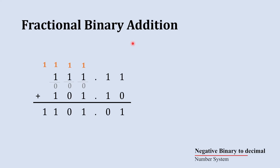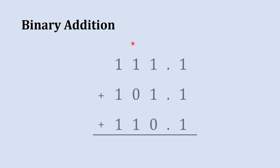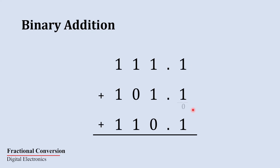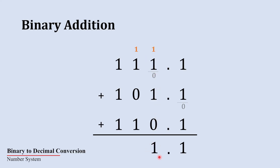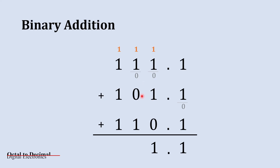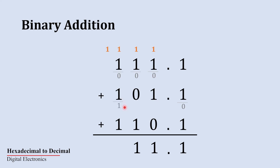Now let's jump to the three-layer addition, where you will find something new. We again start with the rightmost column: 1 plus 1, sum is 0, carry is 1. Then 0 plus 1, sum is 1. We place a point and move to the next column. Adding 1 plus 1, sum is 0, carry is 1. Then 0 plus 1 is 1 and 1 plus 0 is 1. Next column: 1 plus 1, sum is 0, carry is 1. Then 0 plus 0 is 0 and 0 plus 1 is 1. Next column: 1 plus 1, sum is 0, carry is 1. Then 0 plus 1 is 1 and 1 plus 1 gives sum 0 with carry 1.